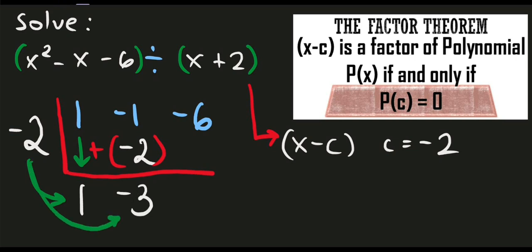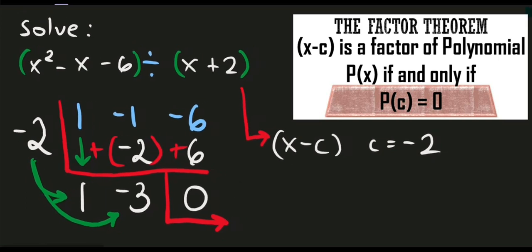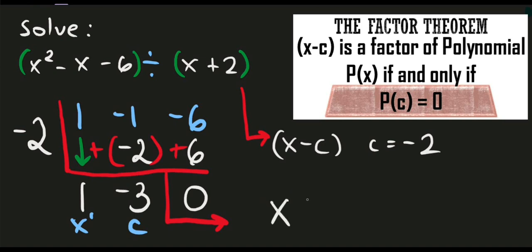Multiply again to our divisor: negative 2 times negative 3 gives us positive 6. Add the value again: negative 6 plus 6 is equal to 0. The remainder for this given problem is 0. So we have the constant as negative 3, which stands for the constant term, and 1 stands for our first degree or x raised to 1. So the answer for this given problem is x minus 3.